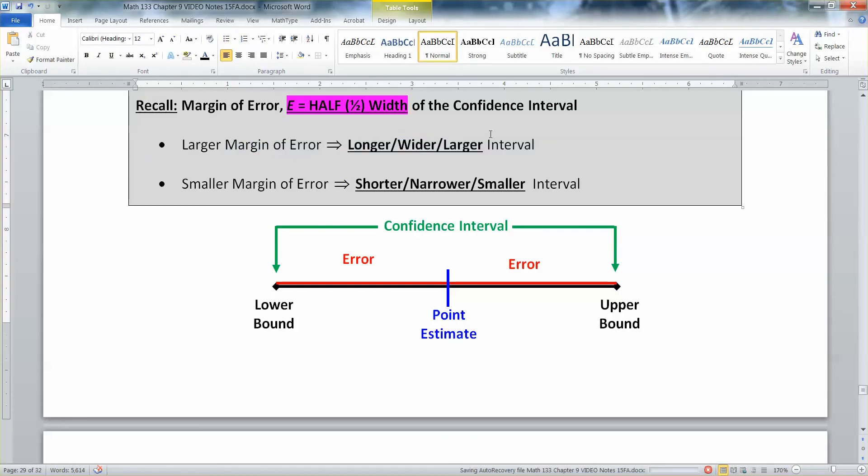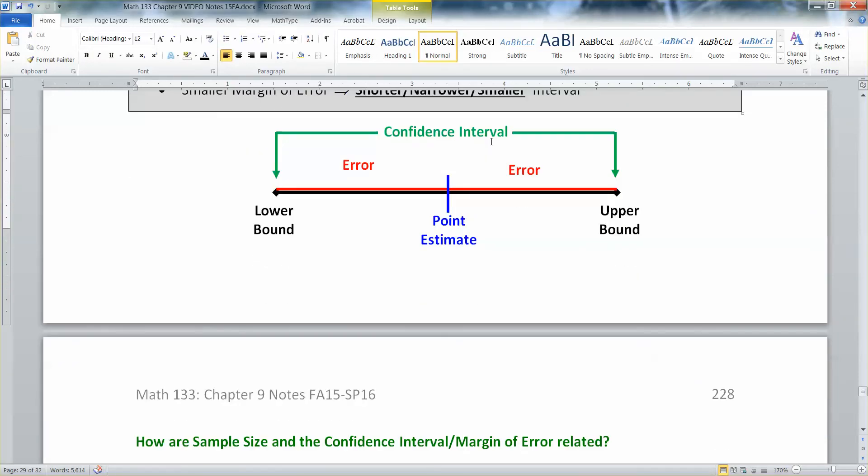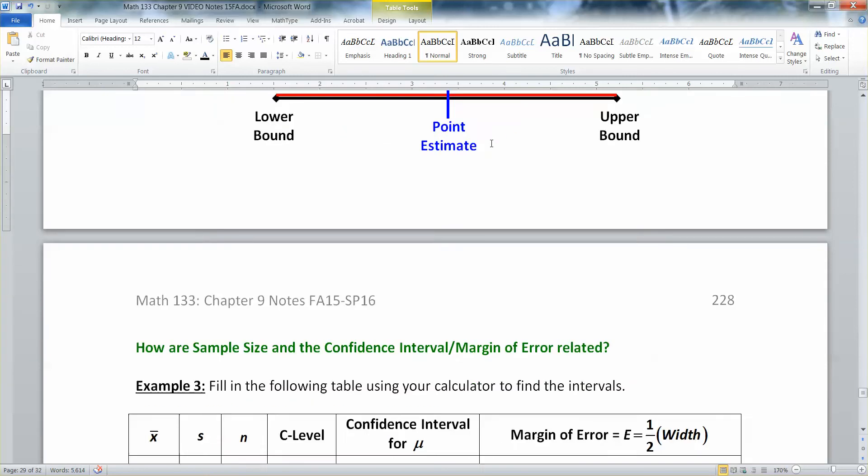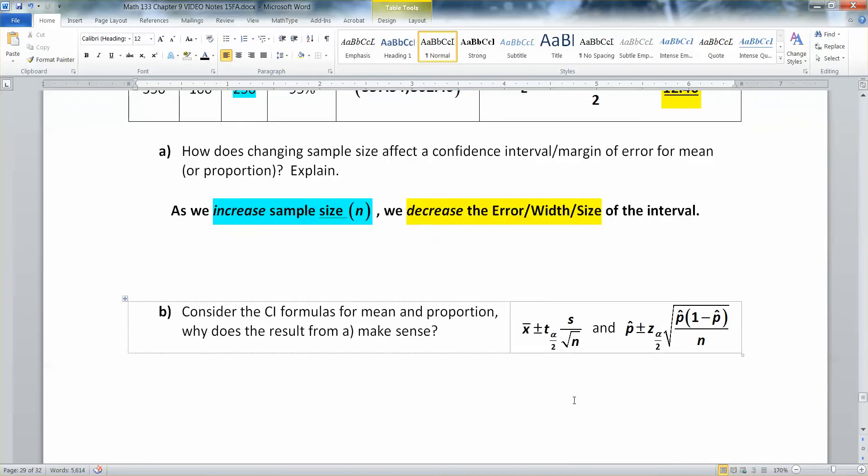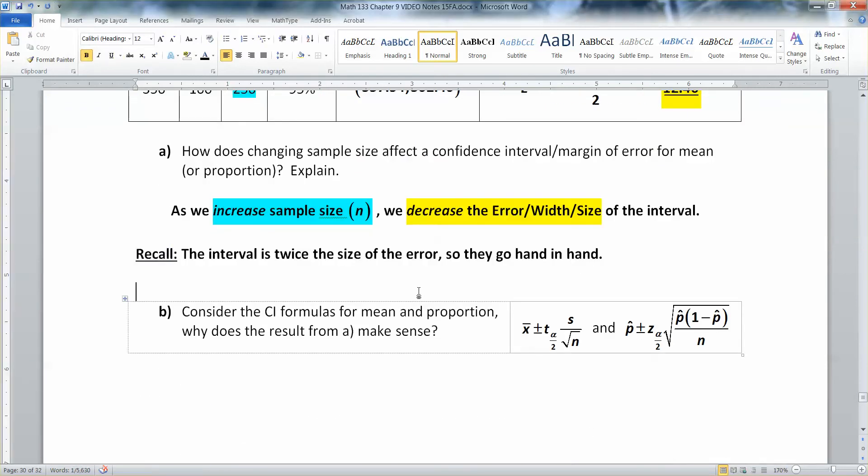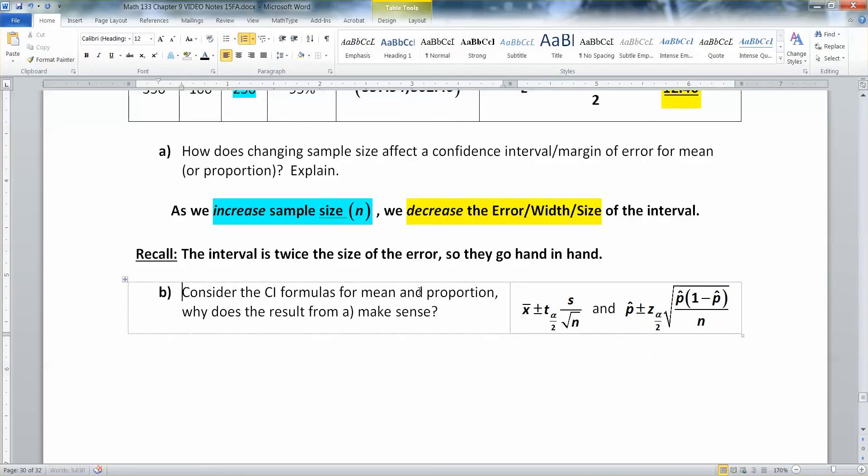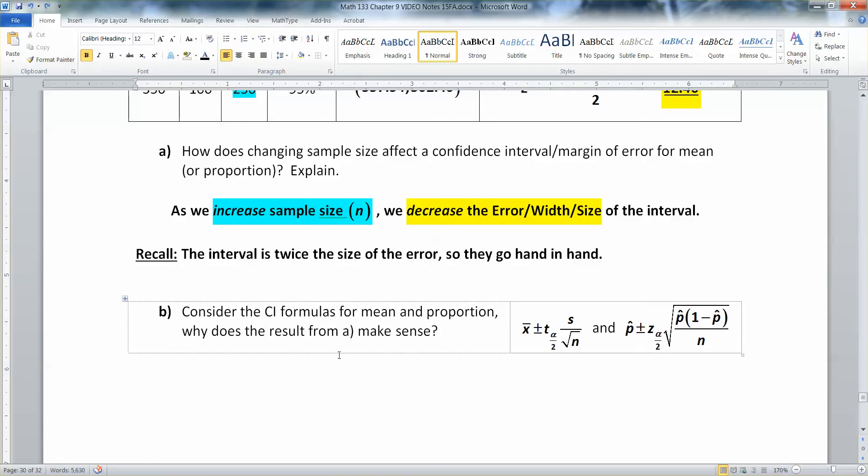We learned that the larger your error, the larger your interval. Right? Because they go hand in hand. All it is is the intervals twice the error. Right? So let me just make a note of that. So just recall that the interval is twice the error. Right? And that means they go hand in hand. When one gets bigger, the other gets bigger. We saw that. Oops. We saw that a previous page ago.